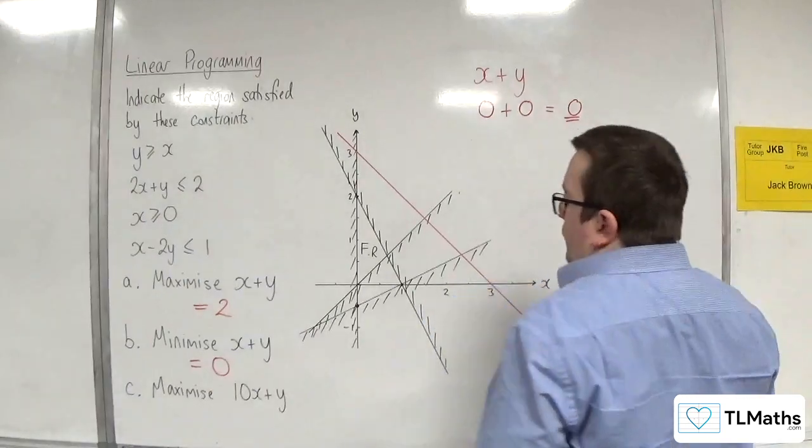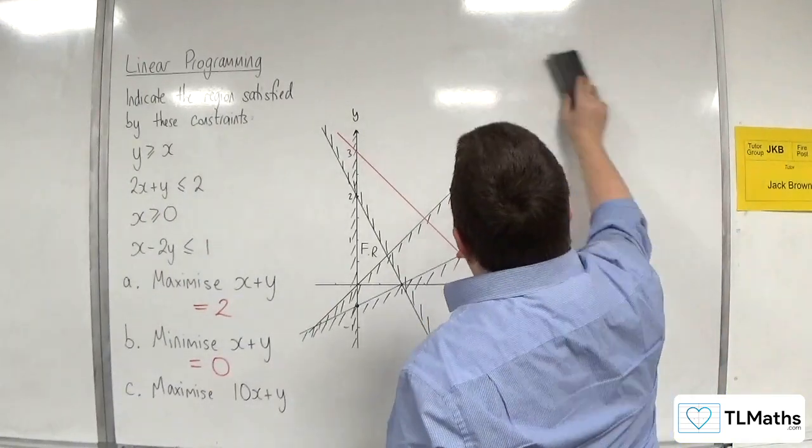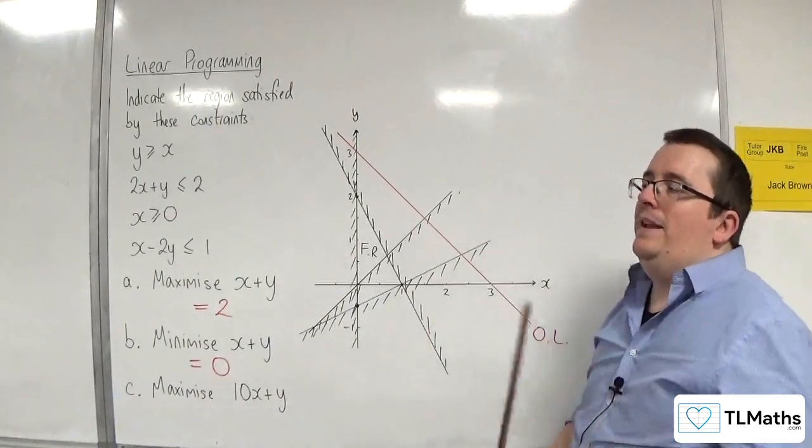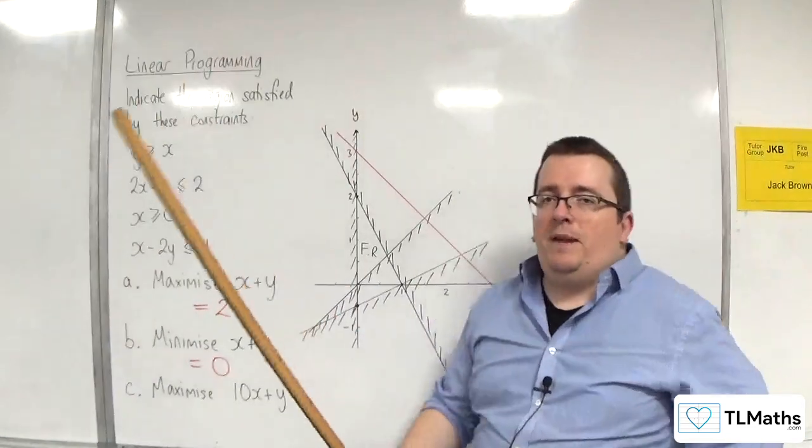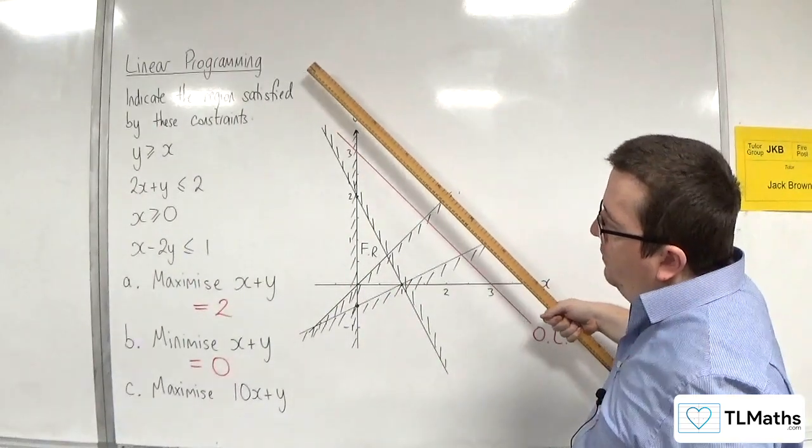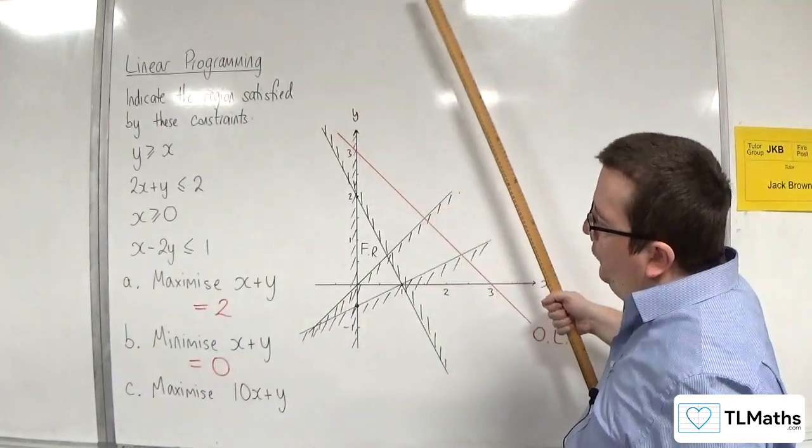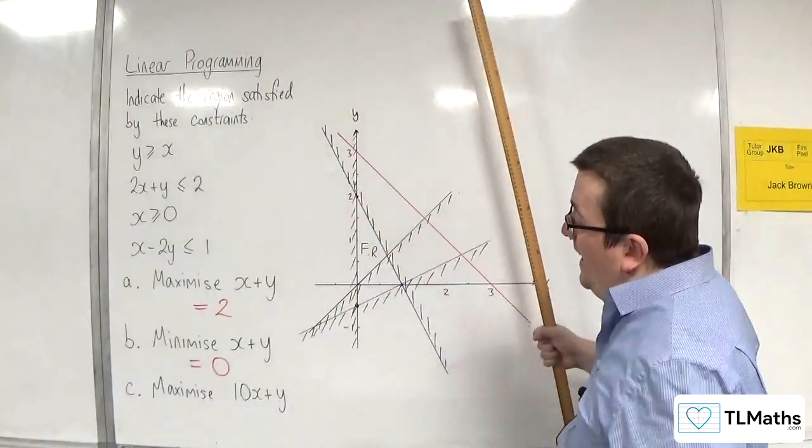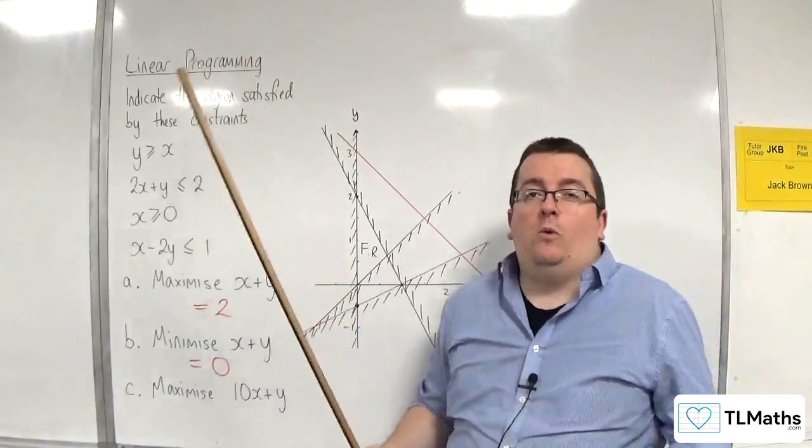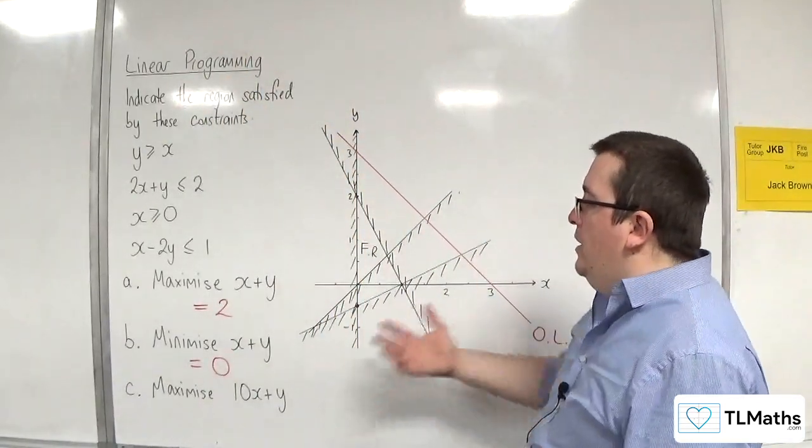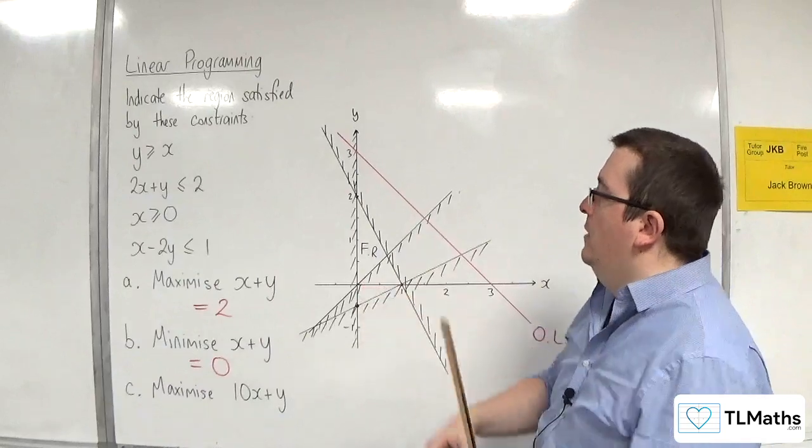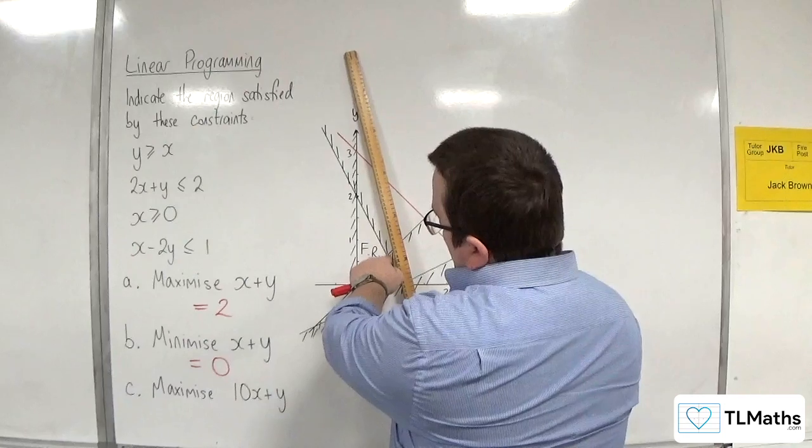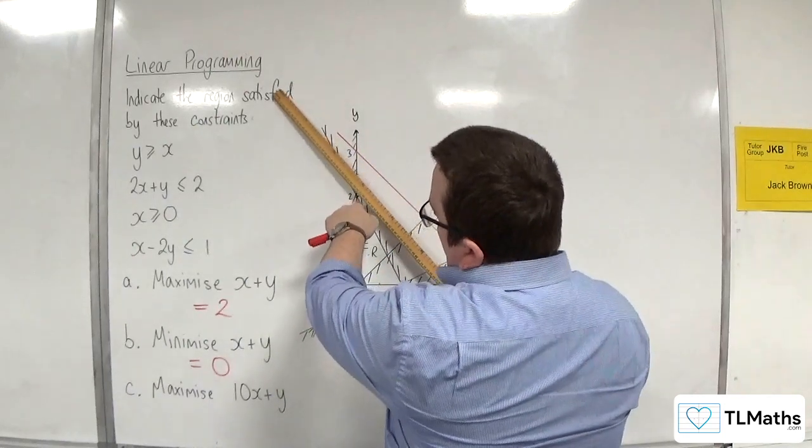Now, the last one, maximize 10X plus Y. Sometimes, depending on the graph that you've got, it can be quite awkward to figure out how steep the line is, at which point it's going to hit, well, which point is it going to hit on the feasible region. It sometimes won't be obvious. I mean, I know it's not going to be 0, 0, because regardless of how steep this line is, it might hit this point first, or it might hit that point first. I don't know, but it's not going to hit 0, 0 first.